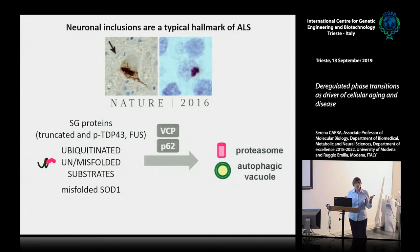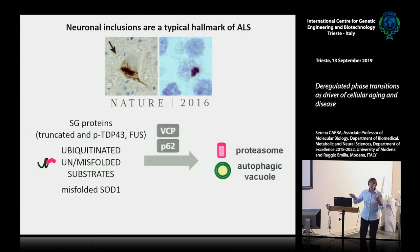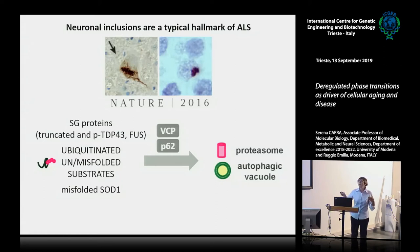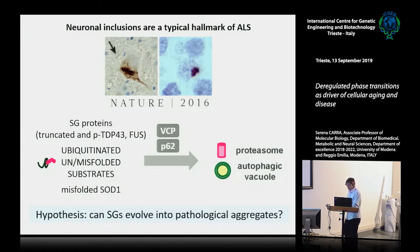One typical feature of ALS, like many neurodegenerative disorders, is the accumulation of amyloid-like aggregates mostly found in the cytoplasm. These aggregates contain stress granule proteins including TDP-43 in truncated and phosphorylated form, FUS, and several stress granule markers. They also contain a number of misfolded and polyubiquitinated substrates that are generally recognized by the protein quality control system. Given that VCP and P62 target misfolded proteins to degradation and mutations in these genes are linked to ALS, we asked: could stress granules evolve into pathological aggregates, and could failure of protein quality control combined with the intrinsic aggregation propensity of these proteins contribute to aggregate formation and toxicity?